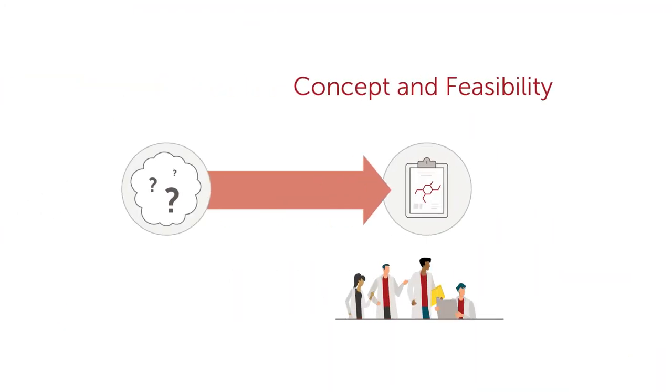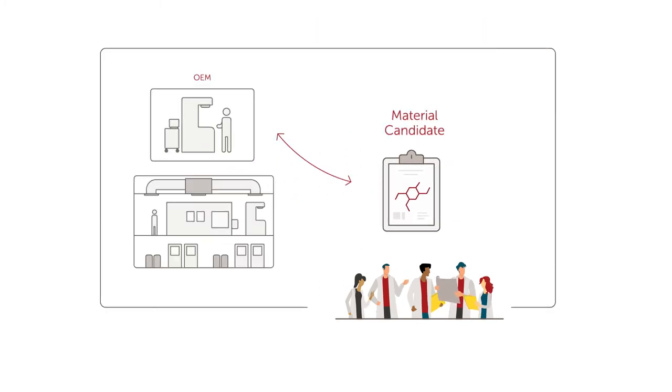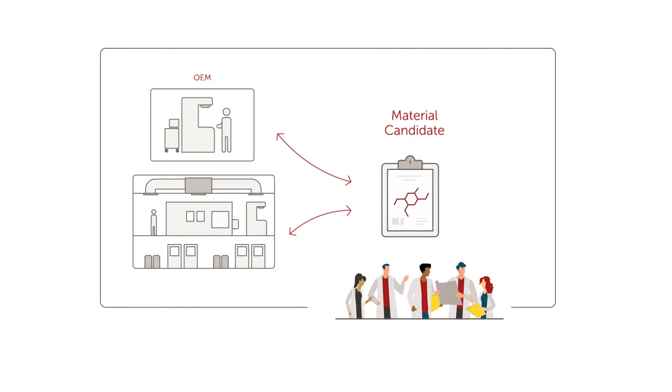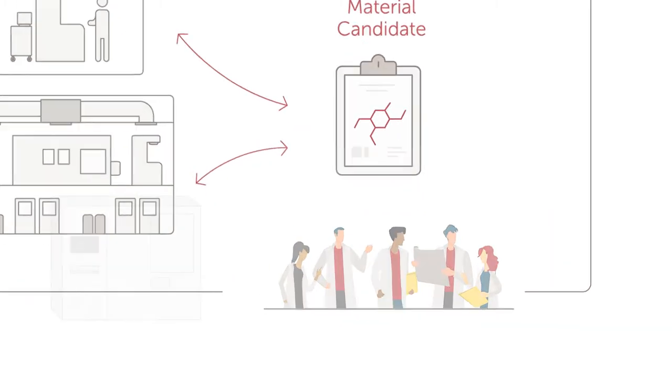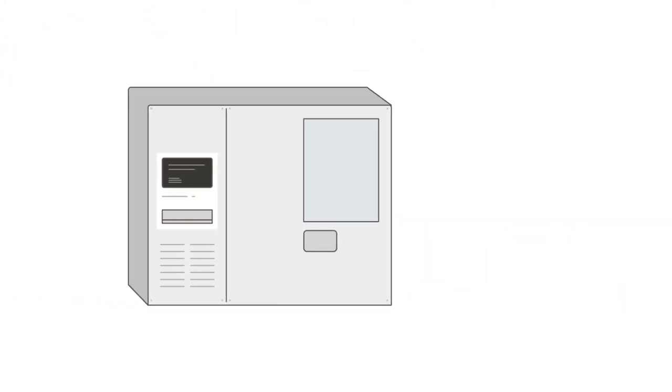As promising material candidates emerge, concept and feasibility begins. Integris engages in initial testing with the IDM and multiple OEMs, exploring possible avenues to ensure a feasible supply of the new material. When a feasible candidate is found,